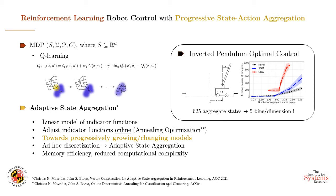What we propose is an adaptive state aggregation scheme. If a state aggregation can be thought of as a linear model of indicator functions, then adaptive state aggregation allows for adjusting the indicator functions online while the Q-learning algorithm is running. To do that, we use an annealing optimization method that allows for starting with a very small model and a small number of representatives, and increasing or growing this model progressively as needed. This leads to progressive growing models for reinforcement learning applications, transitioning from ad hoc discretization to adaptive state aggregation, resulting in memory efficiency and reduced computational complexity, as shown in the figure on the right.